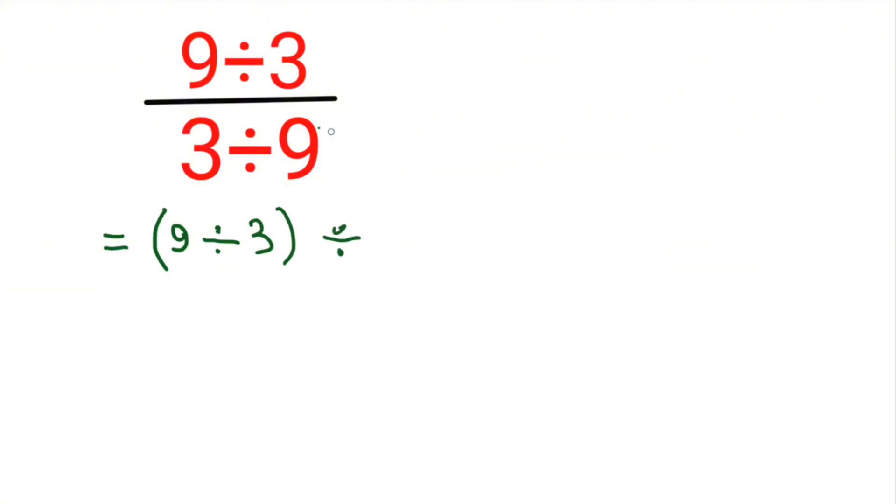And the second parentheses will include 3 divided by 9. Here, 9 divided by 3 we will get 3. Divided by 3 divided by 9, we will get, we will write it in the way 3 by 9.